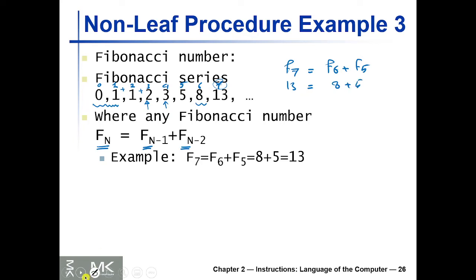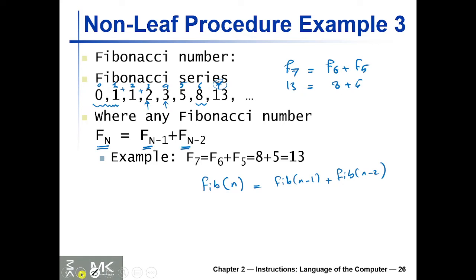That's basically a recursion: if you have a function called Fibonacci(n), then Fib(n) = Fib(n-1) + Fib(n-2), so two recursive calls. This makes the procedure a little more complicated than the previous one, as we're going to see.